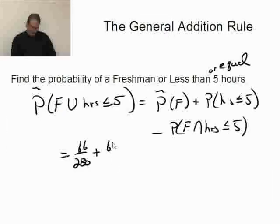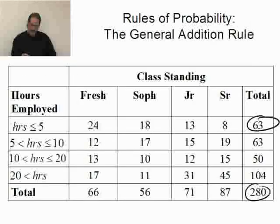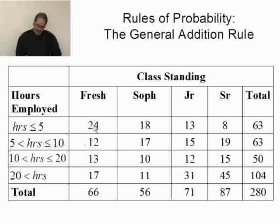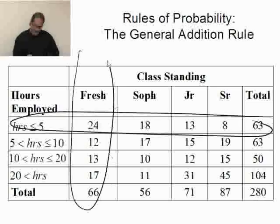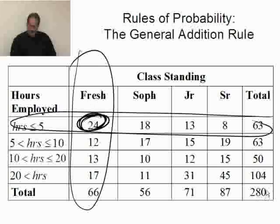the joint probability. Well, I have less than five hours and I have freshman. The joint probability is going to be 24 out of 280. That's freshman and work less than or equal to five hours.